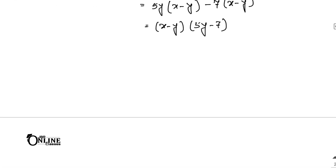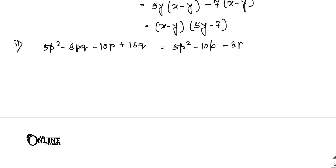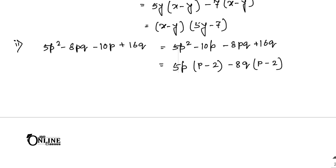Number 2.2: 5p² - 8pq - 10p + 16q. Rearrange as 5p² - 10p - 8pq + 16q. Common 5p from the first two gives 5p(p - 2). Common 8q from the next two gives 8q(p - 2) — wait, minus 8q. So (p - 2) is the first factor and (5p - 8q) is the second.